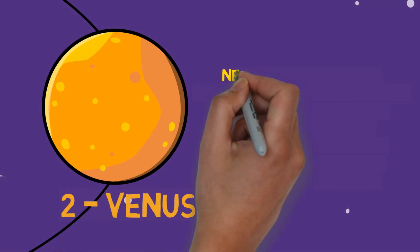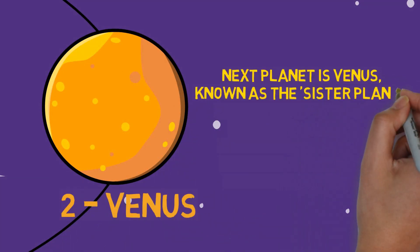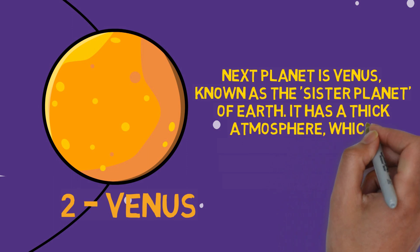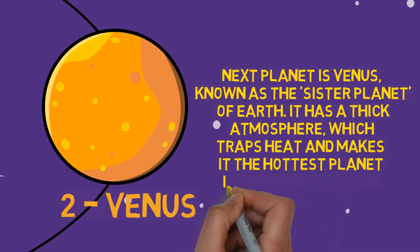The next planet is Venus, known as the sister planet of Earth. It has a thick atmosphere which traps heat and makes it the hottest planet in our solar system.